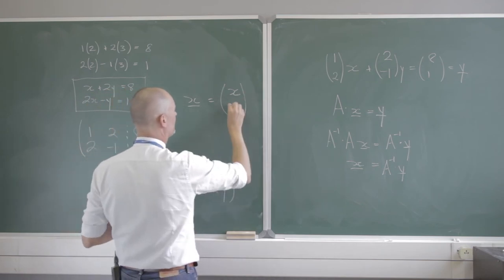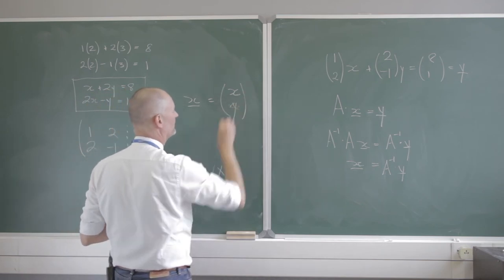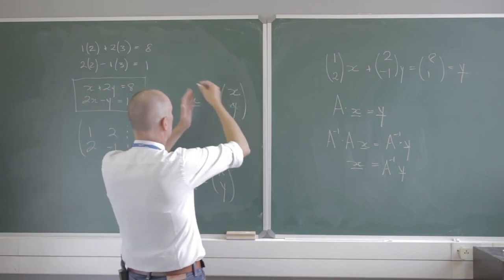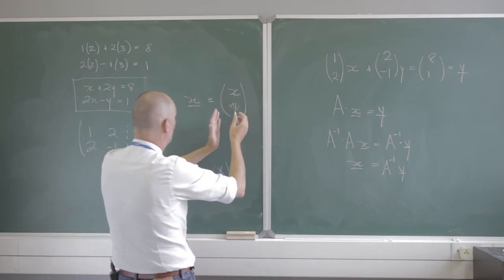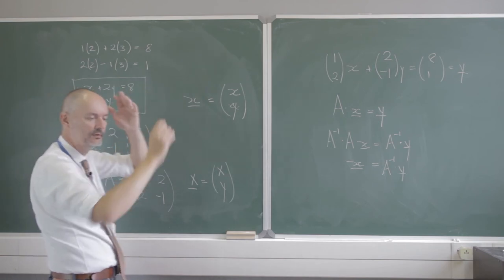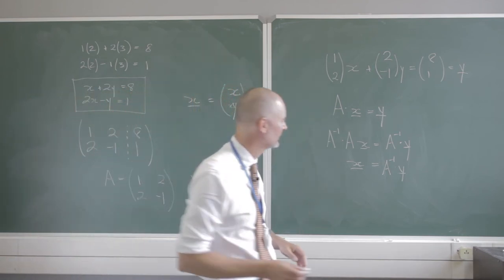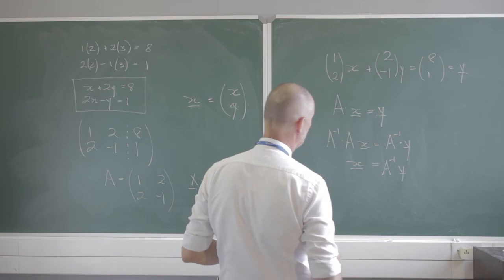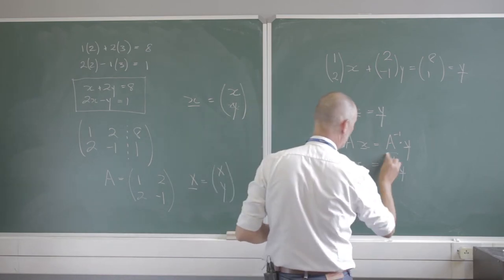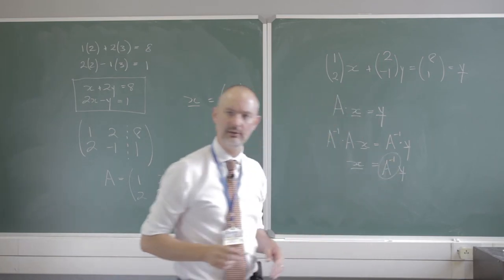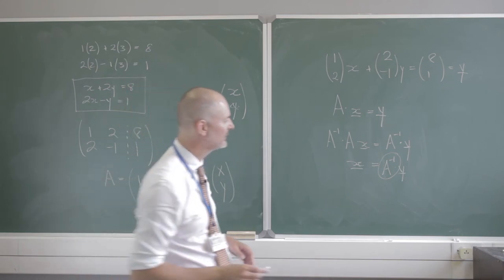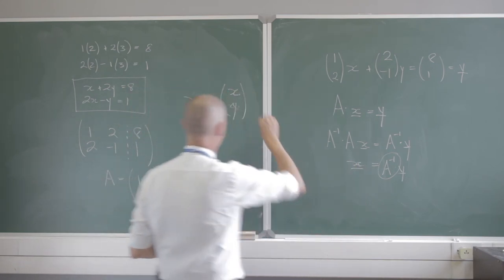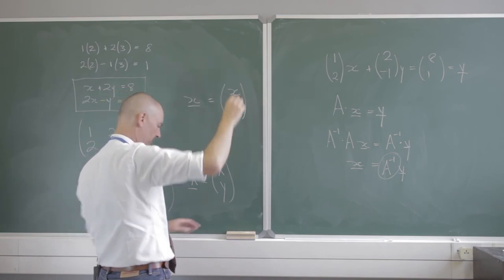In textbooks you might see this as x sub 1 and x sub 2, so as not to cause confusion between the vector x and its components. The only thing that remains is for us to compute A inverse. If I have A inverse and multiply it by y, I get my solution for x and my solution for y.